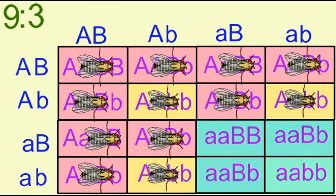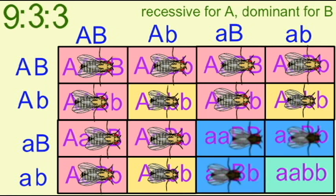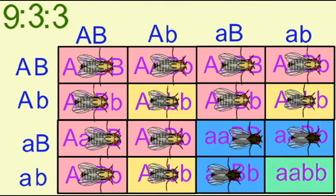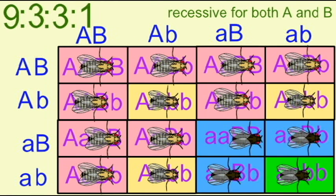3/16ths have sepia eyes and the wild type body color, 3/16ths have red eyes but an ebony body color, and 1/16th would have both the sepia eyes and the ebony body color. So a 9 to 3 to 3 to 1 ratio would be observed in the F2 generation for these traits.